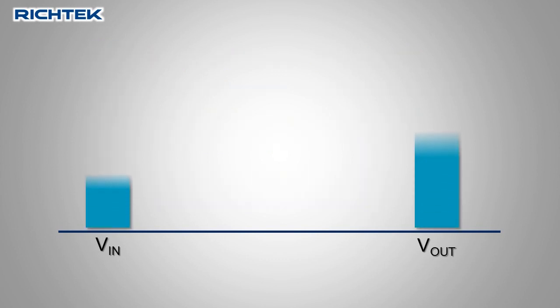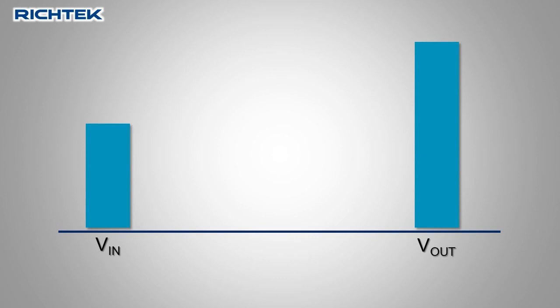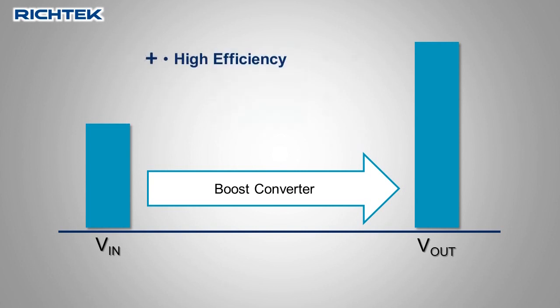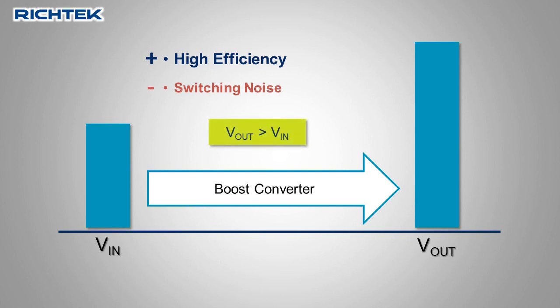In applications where the output voltage is higher than the input voltage, you need to step up the voltage — this requires a boost converter. Boost converters are also switch mode converters and have good efficiency and can be used in applications with various step-up ratios. But the output voltage will contain some switching noise. Whenever the output voltage is higher than the input voltage, you will need a boost converter.